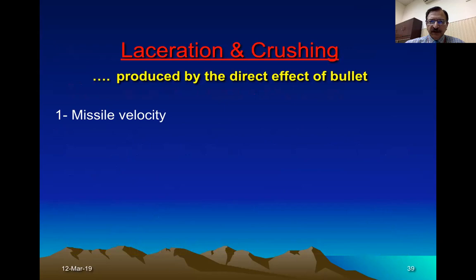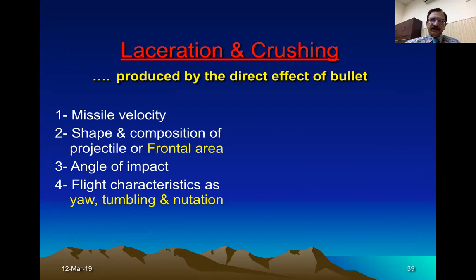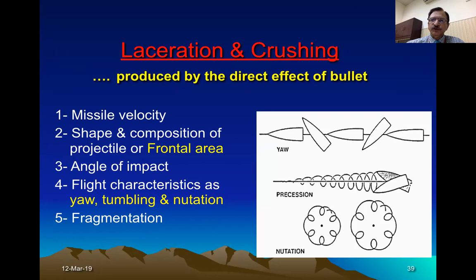Laceration and crushing depend on the muzzle velocity, the shape of the projectile, the angle of impact, and other characteristics such as atypical movements — yaw, tumbling, and precession. These factors all change the appearance of laceration and crushing. The bullet may also be fragmented after passing through an intermediary pathway such as glass or metal, causing multiple entry injuries.